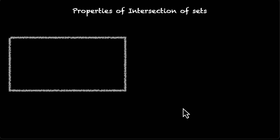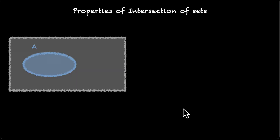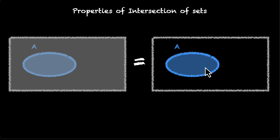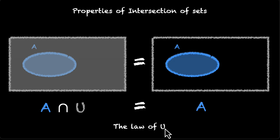We have A and then we have the entire universe. What's common between these two? The set A is common between them — everything inside A is also inside the universe. So if we're looking for things in common, we end up with the set A. Therefore A intersection U is equal to A. This is called the law of U.